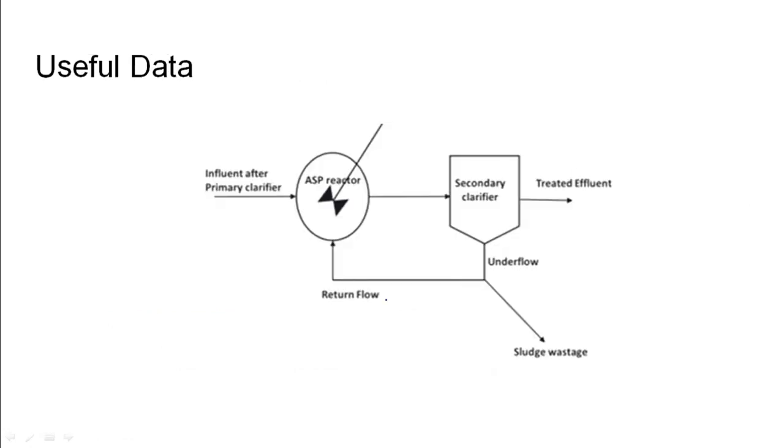For municipal wastewater treatment we use activated sludge process. We send a certain amount of influent into the system which has a certain amount of BOD, and our target is to reduce the BOD levels so that the water becomes less polluted.